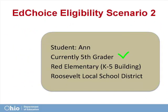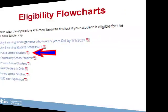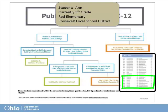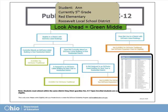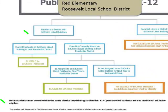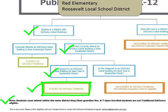In our next example, we have Ann, currently a 5th grade student at Red Elementary, a kindergarten to 5th grade building in Roosevelt Local Public School District. We must review the public school student K-12 flowchart and the list of eligible buildings. Red Elementary is not on the list. However, next year Ann will move up to Green Middle School, a 6th to 8th grade building in Roosevelt Local. Green Middle School is listed. After verifying that Ann is a resident of the district and will be assigned to an EdChoice listed building next year — the look-ahead year — we can be confident that Ann is traditional EdChoice eligible.